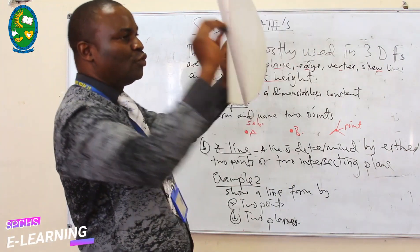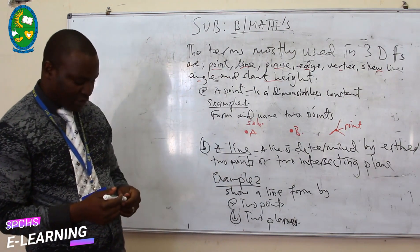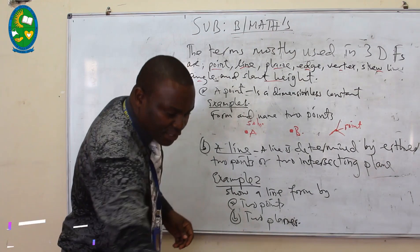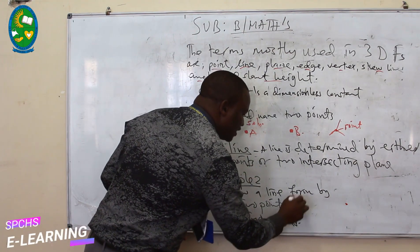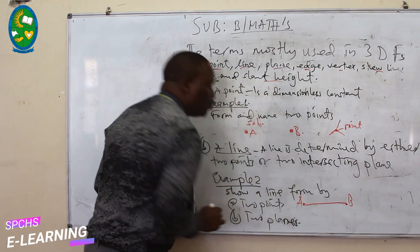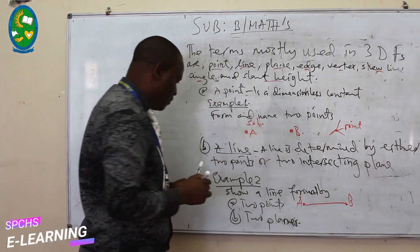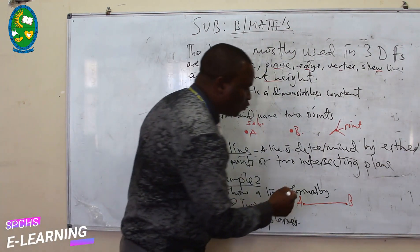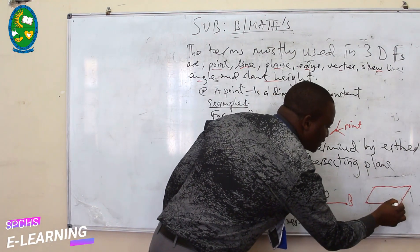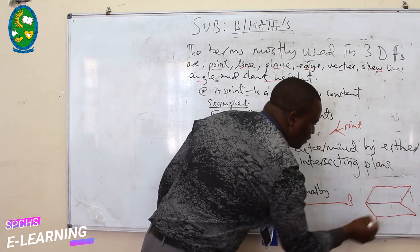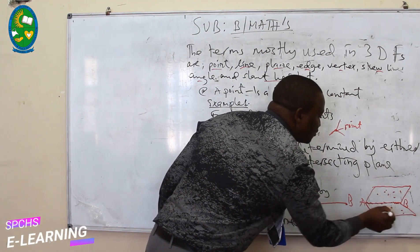To show a line formed by two points: put a point here and another point here, name them a and b, then join the two points. To show a line formed by two planes: draw two planes — the first one and the second one — and the line formed at their intersection is the line made by those two intersecting planes.